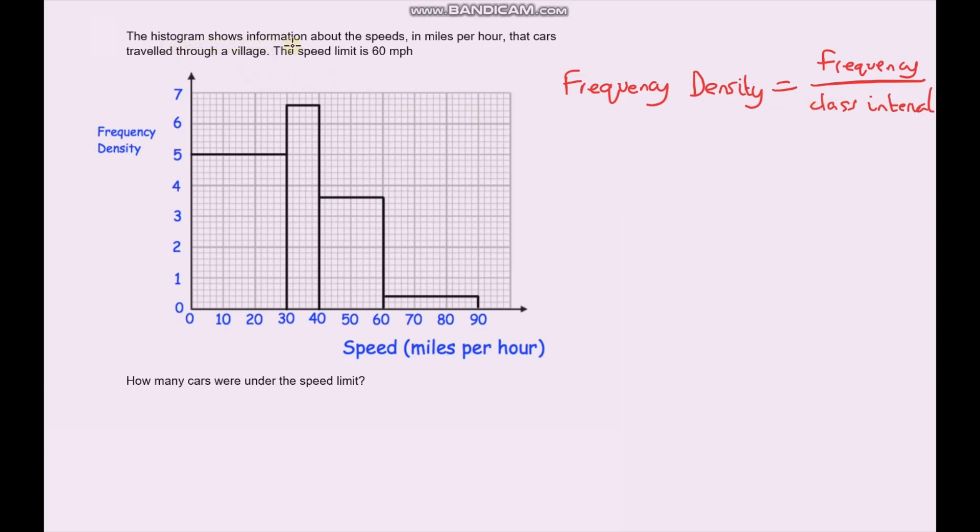The histogram shows information about the speeds in miles per hour that cars travelled through a village, and the speed limit is 60 miles per hour. How many cars were under the speed limit? In order to do that, we need to think about our equation for frequency density. We want to calculate how many cars, that would be the frequency. So let's rearrange this formula. Therefore, to calculate the frequency of something, we take the frequency density and we multiply by the class interval.